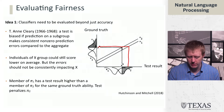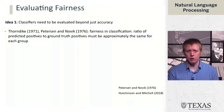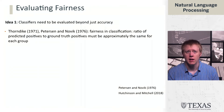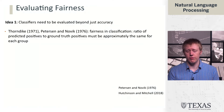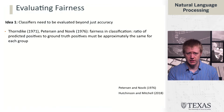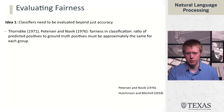This is a regression view of fairness. We can distill this into a sense for classification as well, due to Thorndike, Peterson, Novick, and others. This idea of fairness in classification is grounded in the ratio of predicted positives to ground truth positives, and that ratio must be approximately the same for each group.